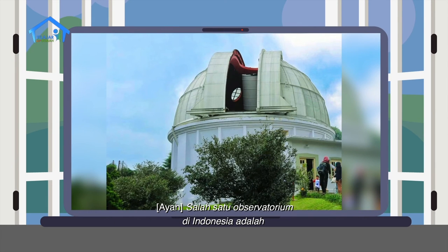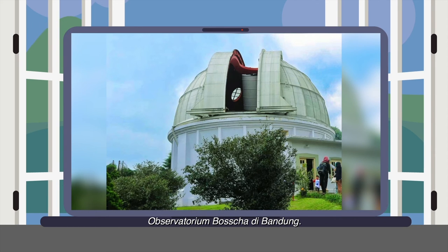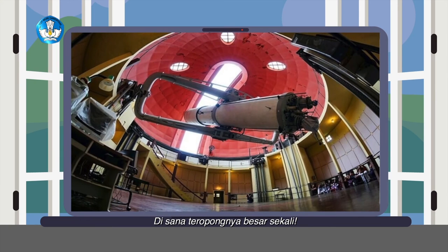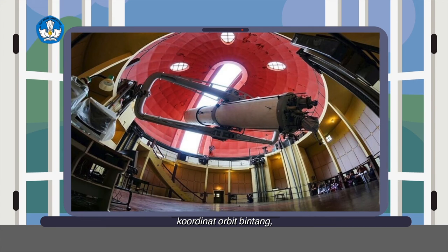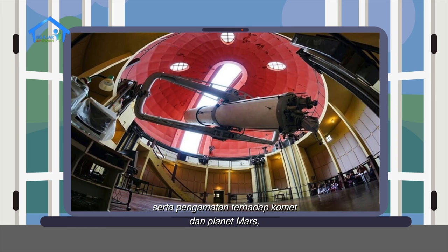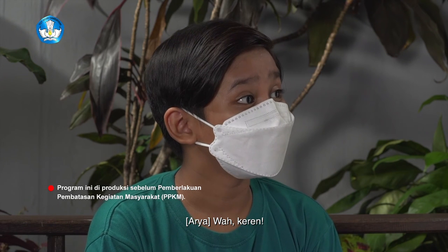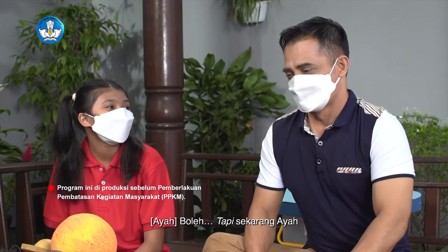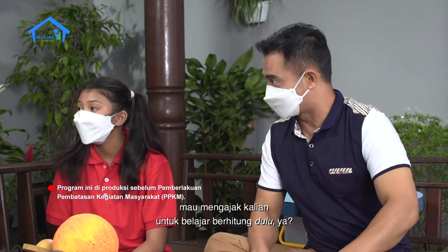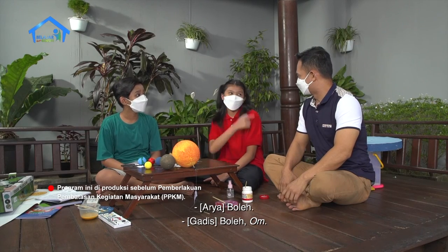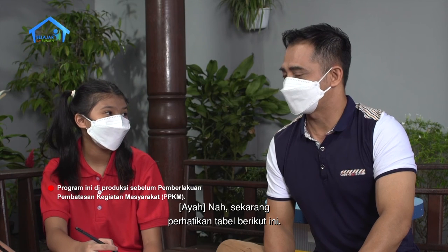Di setiap negara tercatat memiliki observatorium untuk mengamati benda-benda dan peristiwa di langit itu, demi kemajuan ilmu pengetahuan. Salah satu observatorium di Indonesia adalah Observatorium Bosscha di Bandung. Di sana, teleskopnya besar sekali. Teleskop itu dipakai untuk mendapatkan koordinat orbit bintang, pergerakan bintang, mengukur jarak bintang, serta pengamatan terhadap komet dan planet Mars, Jupiter, dan Saturnus. Wah, keren. Kapan-kapan ajak ke sana ya. Boleh, tapi sekarang ayah mau mengajak kalian untuk belajar berhitung dulu ya. Boleh, om. Sekarang perhatikan tabel berikut ini. Tabel ini menunjukkan berapa banyaknya observatorium di beberapa negara.